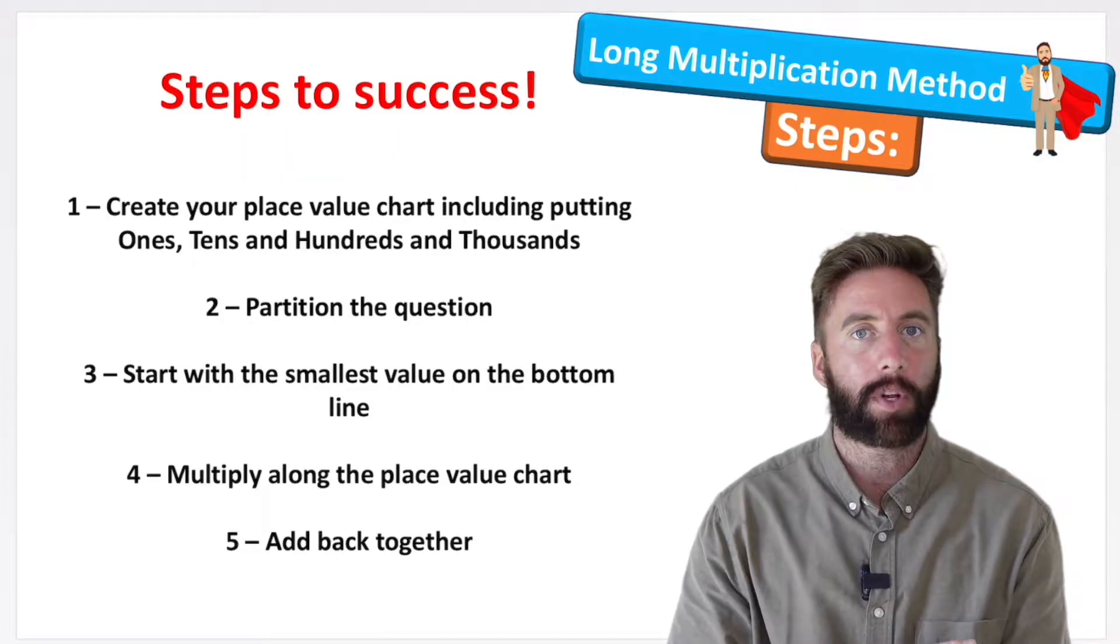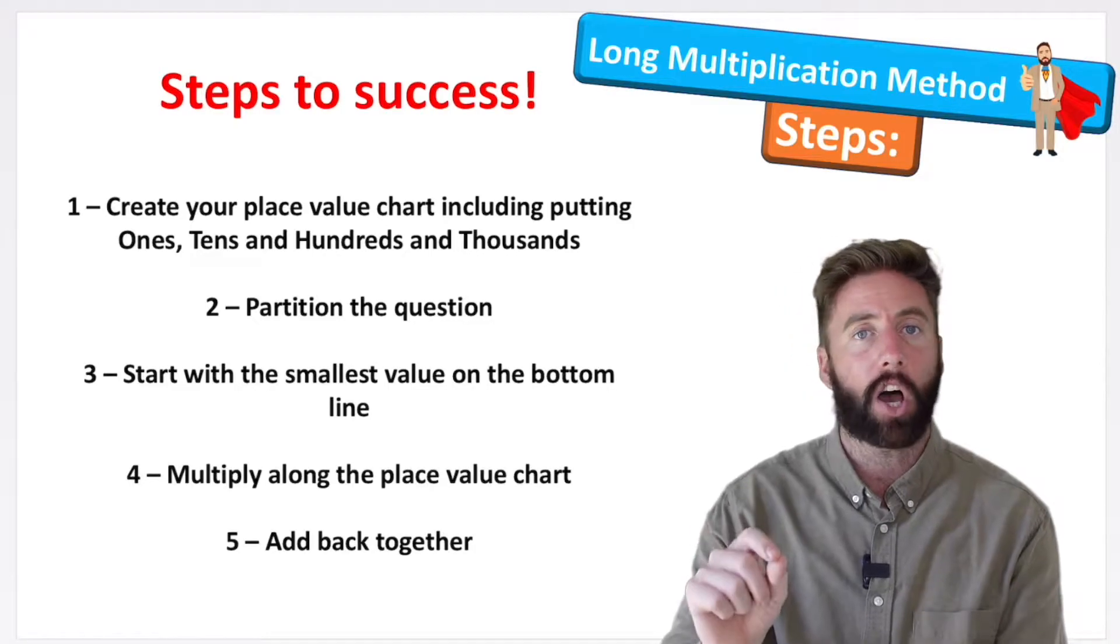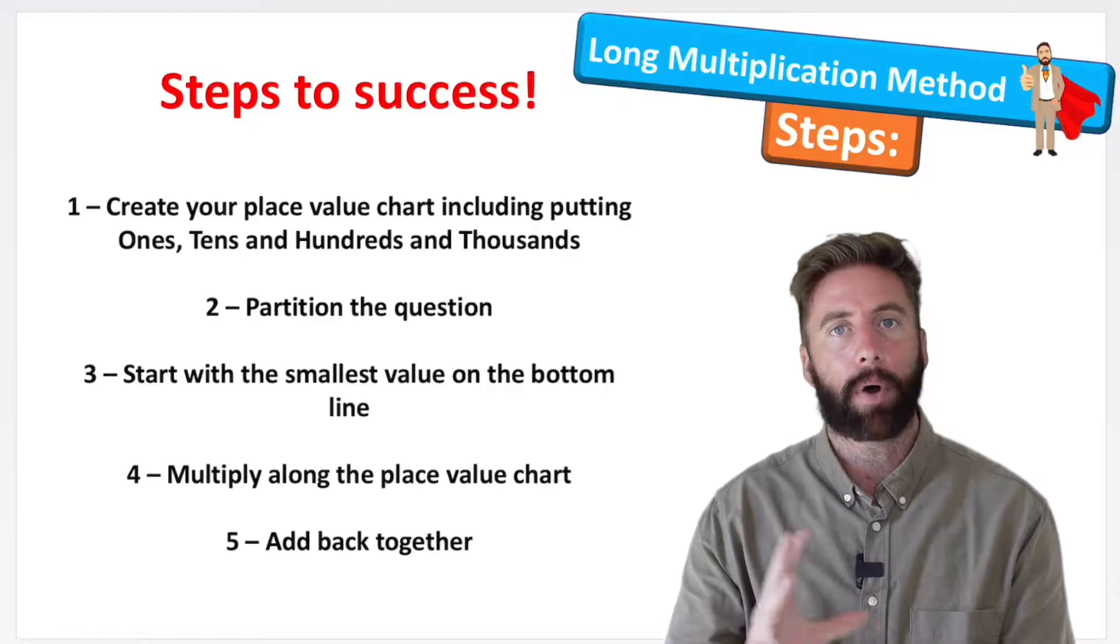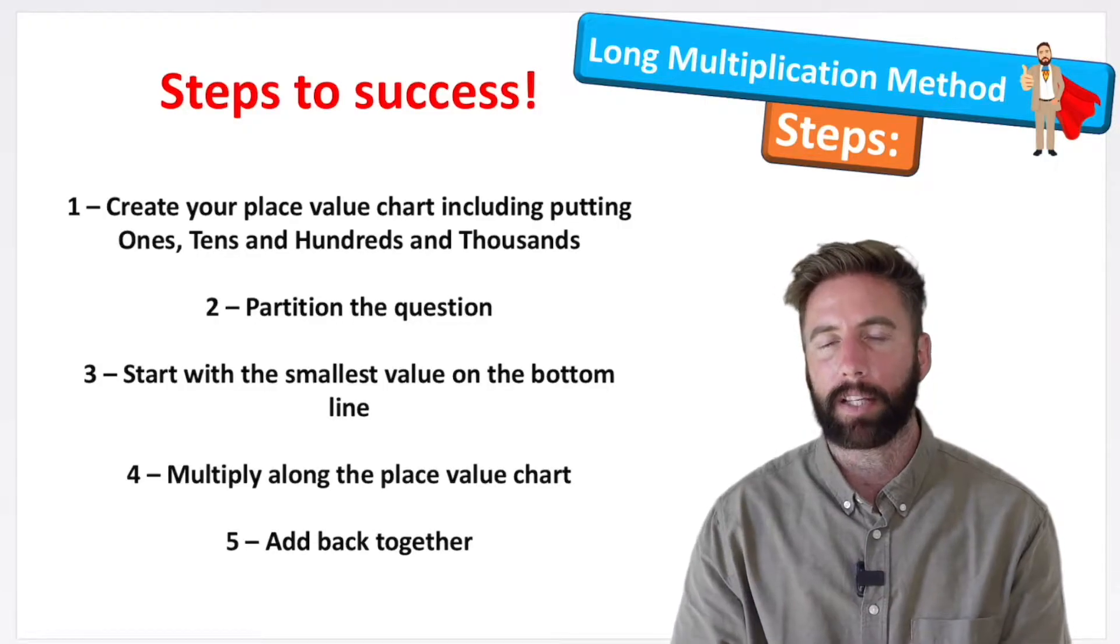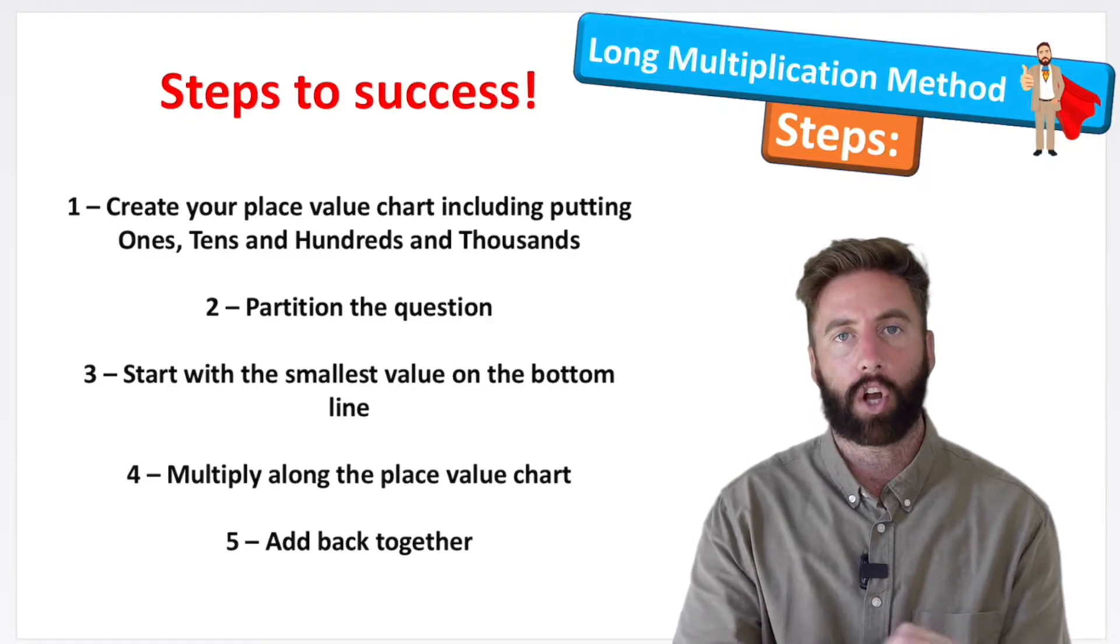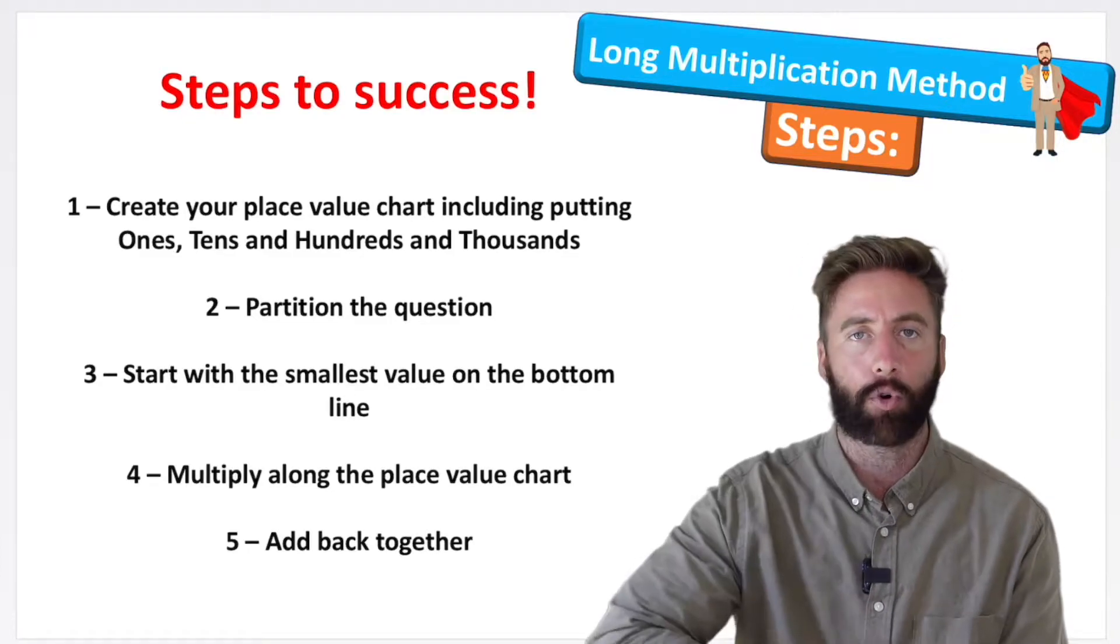The first thing we need to do is make sure we arrange our columns and put our titles on top of those columns so we don't put a number in the wrong place. Then we're going to partition the question, we'll understand what that means in a minute. Then start with the smallest value on the bottom row and work our way up. And finally we're going to add it all back together to get our final answer.